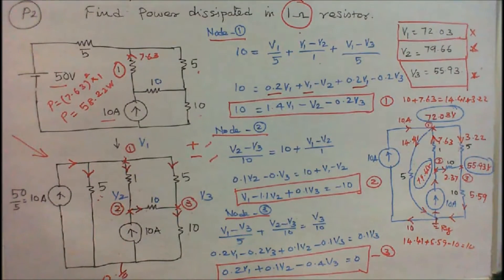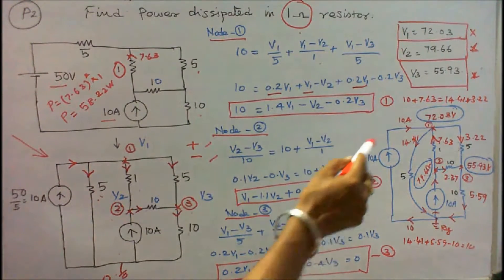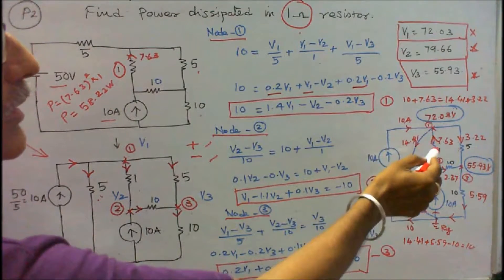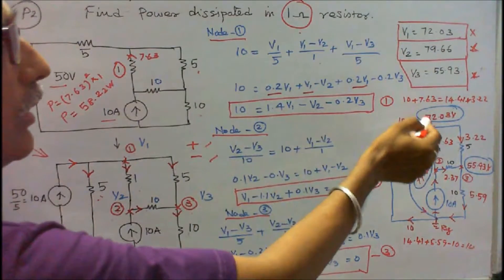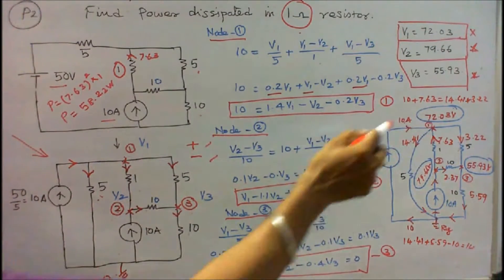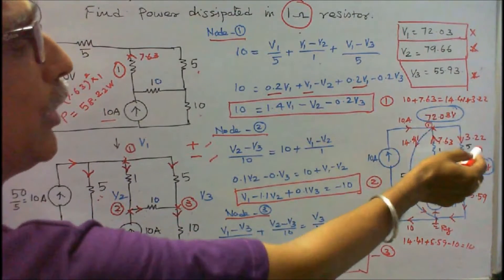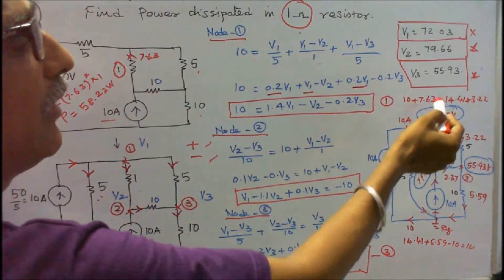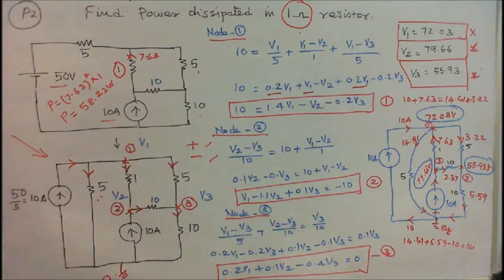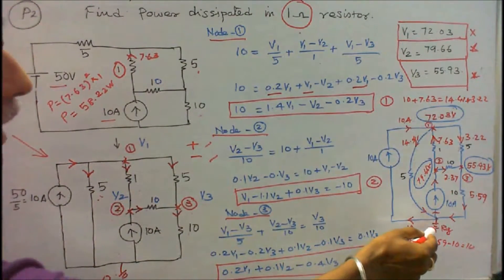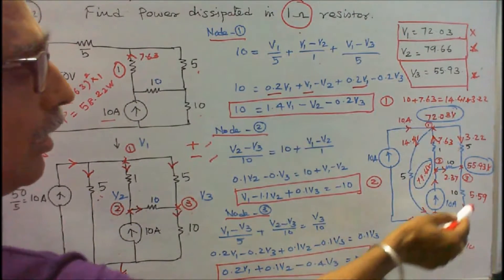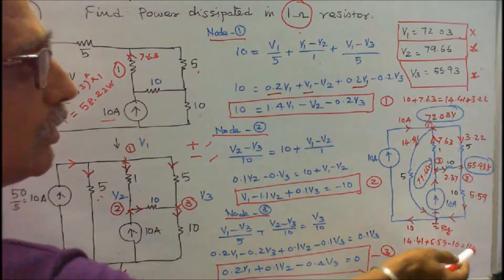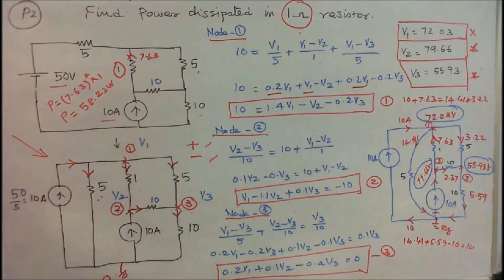Now I verify Kirchhoff's current law. Current entering node 1 is 10 plus 7.63, which equals 17.63. Current leaving node 1 is 14.41 plus 3.22, which also equals 17.63. At the reference node, current entering is 14.41 plus 5.59 minus 10, which equals 10. Kirchhoff's current law is verified.